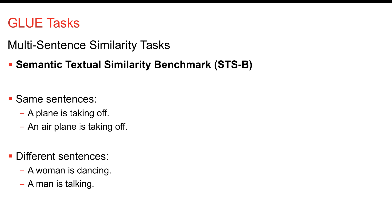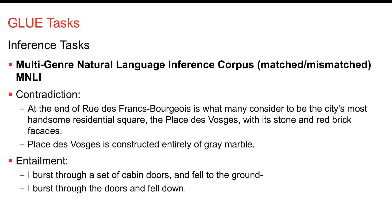This also shows how much NLP appears to understand about sentences. 'A plane is taking off' versus 'an airplane is taking off' — similar. But 'a woman is dancing' versus 'a man is talking' — very different. The inference task is really fascinating because it looks like the model is starting to understand the content of sentences. Do two sentences contradict or build on each other? A contradiction: one text says a place has stone and red brick facades; another says it's constructed entirely of gray marble.